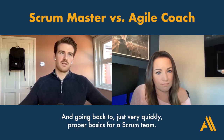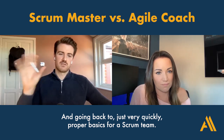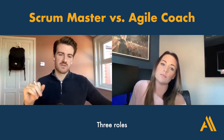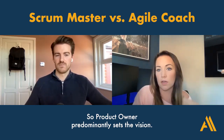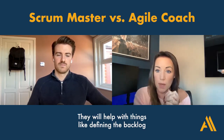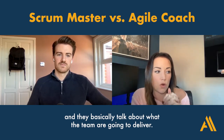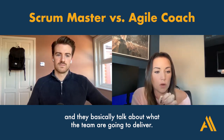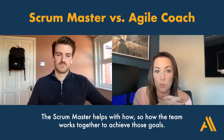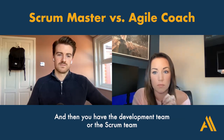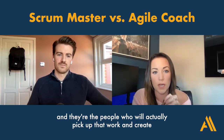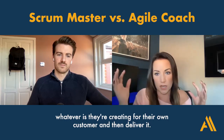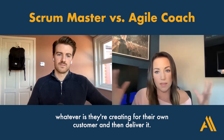Going back to proper basics for a Scrum team, there are three roles. The Product Owner predominantly sets the vision and helps with defining the backlog — they talk about what the team is going to deliver. The Scrum Master helps with the how, so how the team works together to achieve those goals. And then you have the development team, who actually pick up the work and deliver it to the customer.